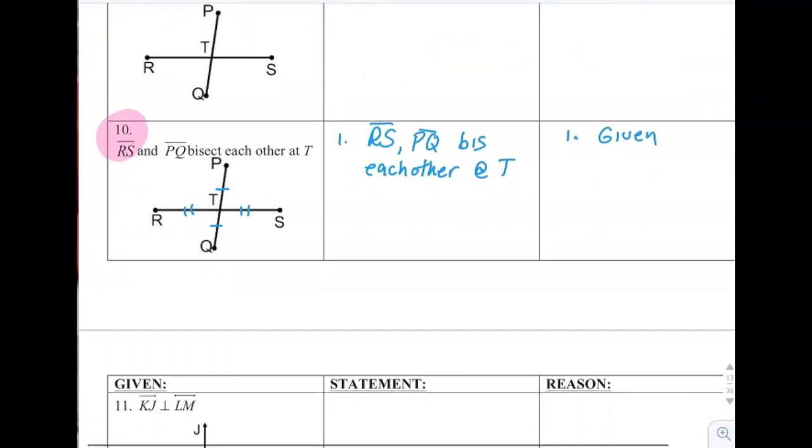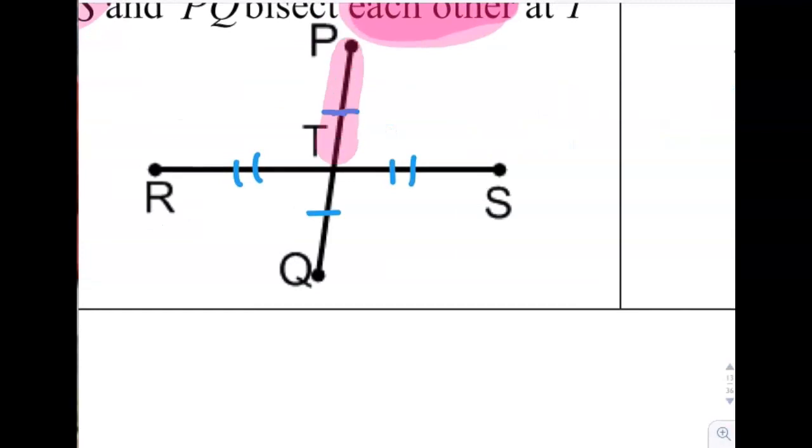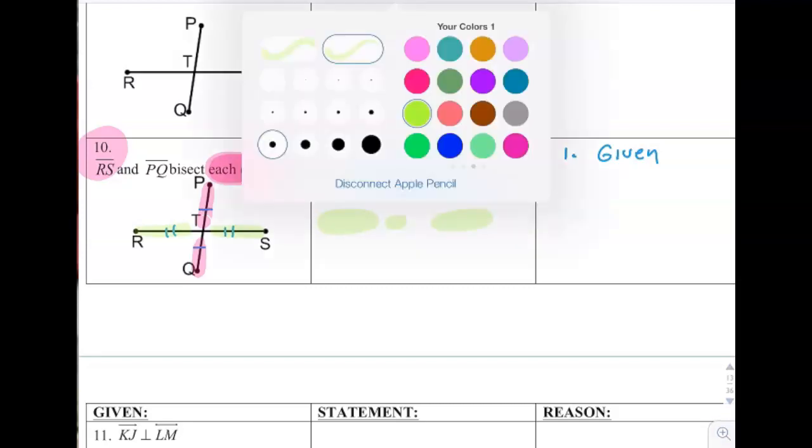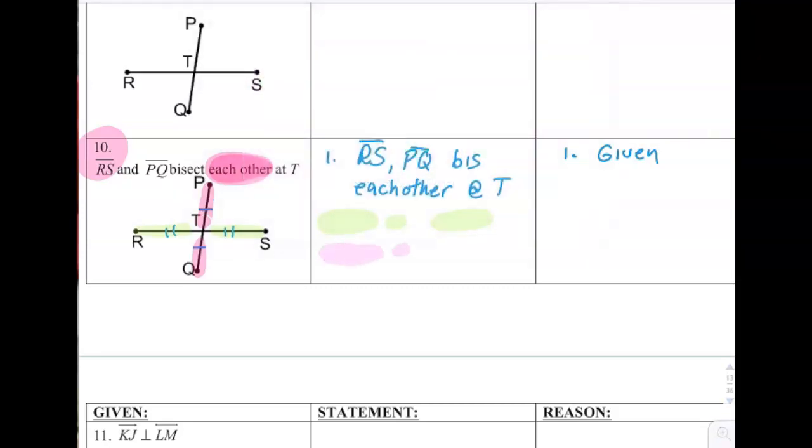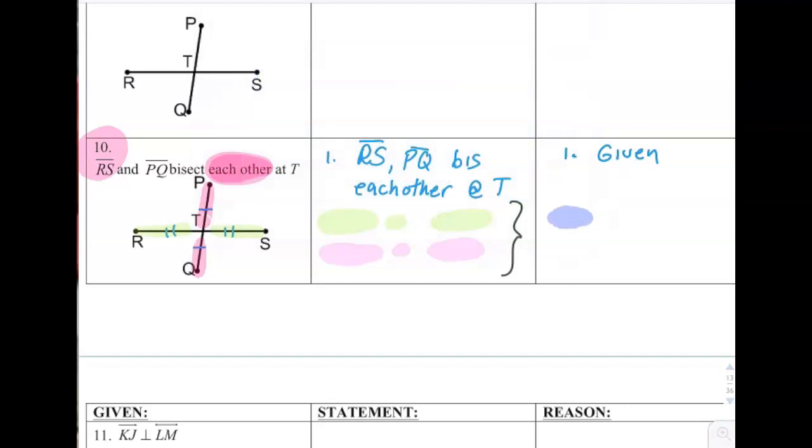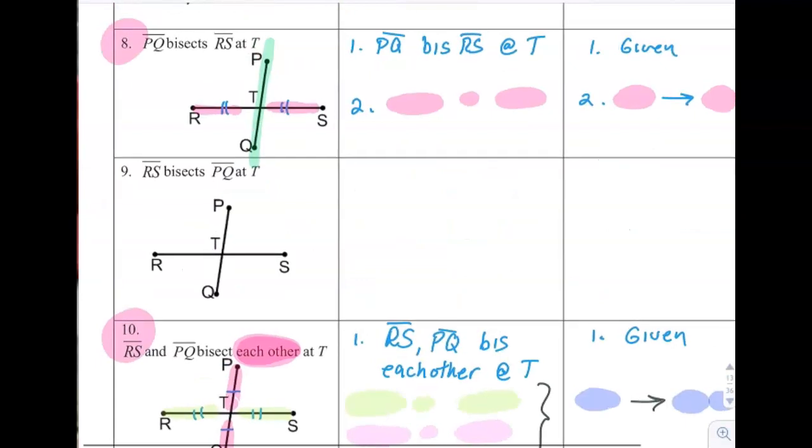Number 10, this one's similar except it says they bisect each other. So if they bisect each other, then this is bisected by the other one, and this is bisected by the pink one. So you have a couple of things here. Once the givens are written down, you can say RT is congruent to ST, and you can say PT is congruent to QT, and both of those have the same reason. So you could actually write it as one thing over here. You can write a bisector implies two congruent segments. So each other, you're going to have two, whereas in number eight, you only had one.